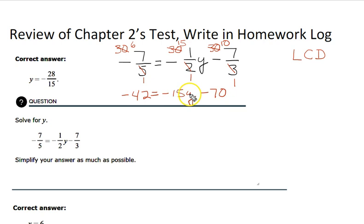Now we want our value of y, the variable, to be positive. We could leave it here, but if we want it positive, we would just move it over to this side as a 15y. We're going to move our negative 42 over to this side as a positive 42. This will give us negative 28.